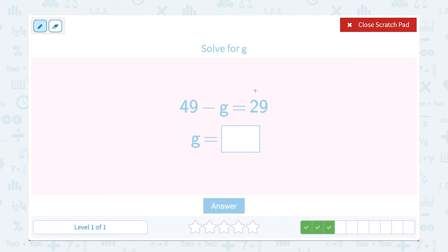49 minus G equals 29, and we want to solve for G. 49 minus G is equal to 29. I want to get G by itself. This is a positive 49, and we're subtracting G. So the first thing I'm going to do is subtract 49 on both sides. On the right side, I'm going to have 29 minus 49, which gives me negative 20.